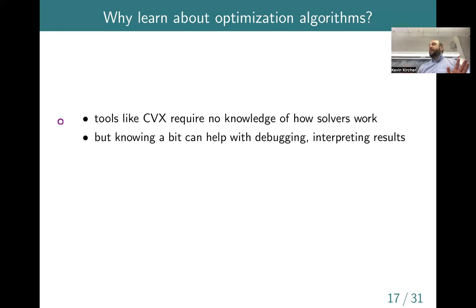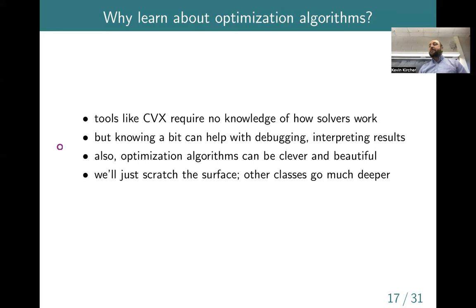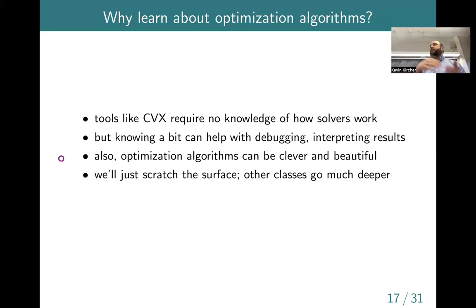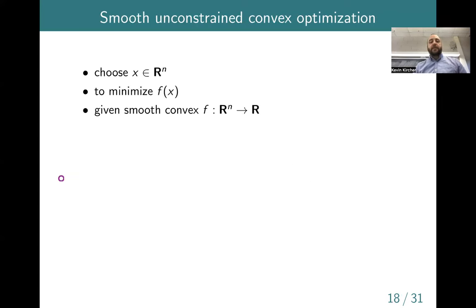We'll focus on smooth unconstrained convex optimization, perhaps the simplest class. Here we want to minimize a convex function F where the objective is smooth — meaning you can take whatever derivatives you need, typically first or second order. For this problem, the optimality condition is that the gradient of F equals zero. The gradient of a scalar function of n variables is an n-dimensional vector, giving n equations in n unknowns.